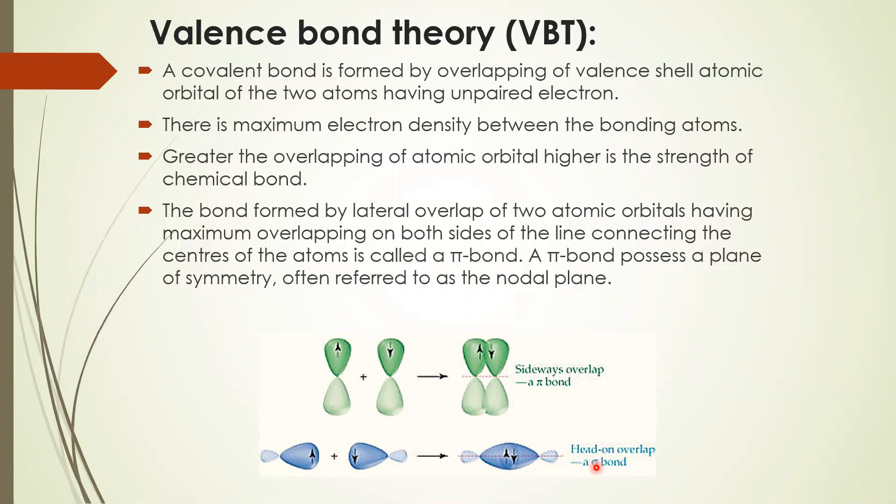The sigma bond is a strong bond, whereas the pi bond is a weak bond because the pi bond is formed by sharing of electrons from the p orbitals with weak intermolecular forces of attraction. We will learn this in detail.